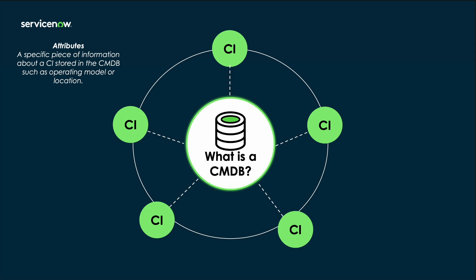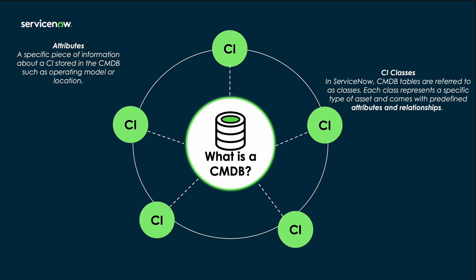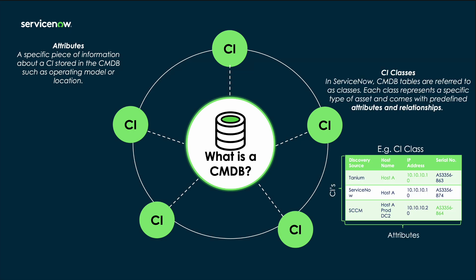One way that you can think of the CMDB is as a collection of tables, where each table contains data about a specific group of CIs, such as all of the hardware components. And although this functions and looks like a table, in ServiceNow we refer to these as CI classes, where in each CI class we have rows detailing the configuration items, and we have columns detailing those key attributes.